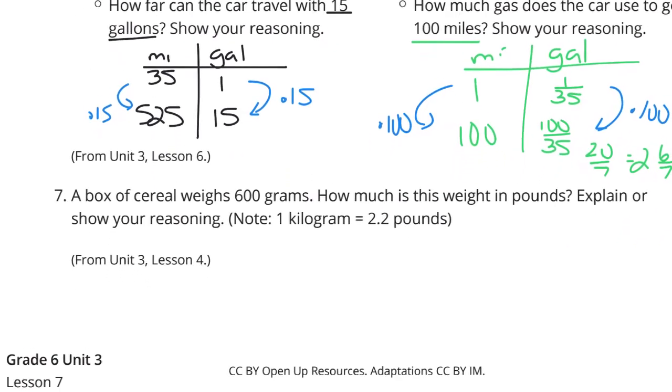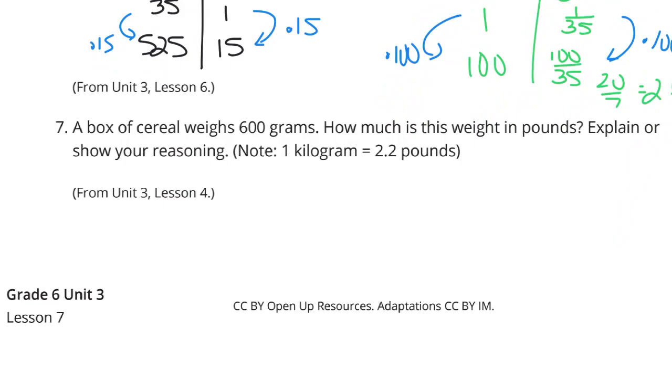Last, but certainly not least. A box of cereal weighs 600 grams. How much is this weight in pounds? Explain or show your reasoning. Note, 1 kilogram is 2.2 pounds. And note, they didn't tell you that 1 kilogram is equal to 1,000 grams. And so if 1 kilogram is equal to 1,000 grams let's do this: 600 grams over 1 using our new strategy here of dimensional analysis. I know that I need to get this into kilograms. So, in order for these units to cancel out I need grams on top and bottom to cancel out and so my unit rate needs to be kilograms and grams here. And so that means 1 kilogram is 1,000 grams.